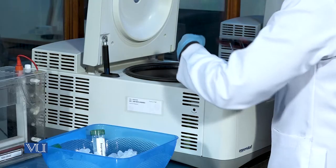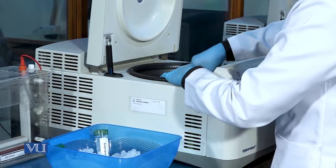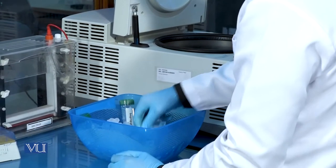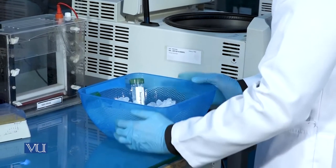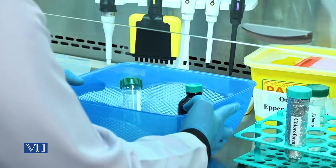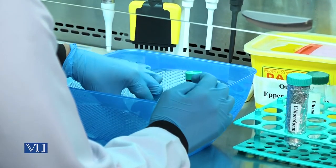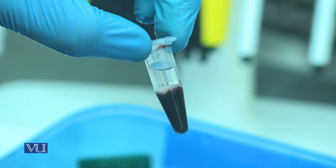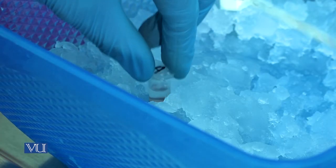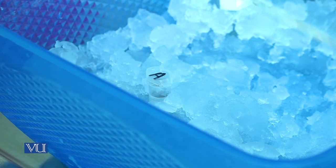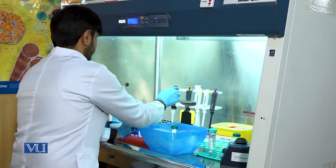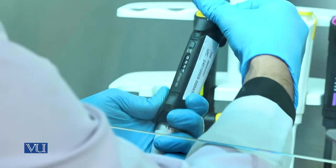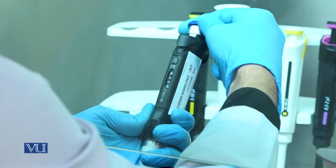After the completion of centrifugation, you will take out the eppendorf tube. As a result of centrifugation, you will observe three layers. First, upper is the aqueous phase that contains the RNA. Second is the interphase and third are the impurities.